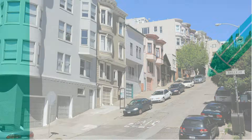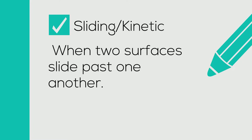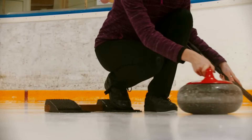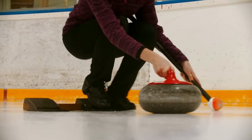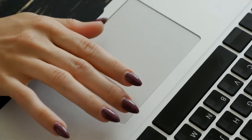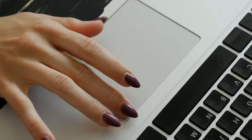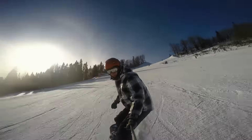Next, we have kinetic friction. Kinetic or sliding friction is friction when two surfaces slide past one another. Some examples: the sport of curling is perfect for sliding friction. As you move your finger across a mouse pad, sliding friction comes into play. And snowboarding is an example of sliding or kinetic friction.